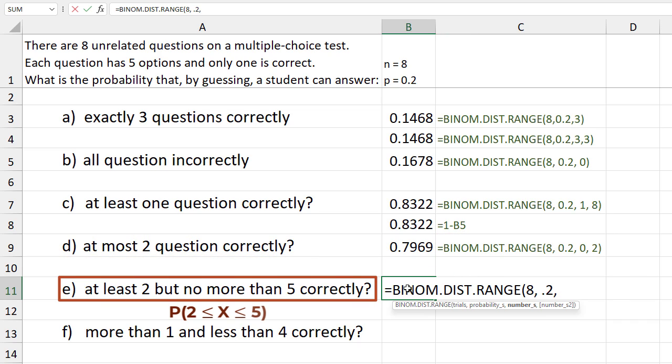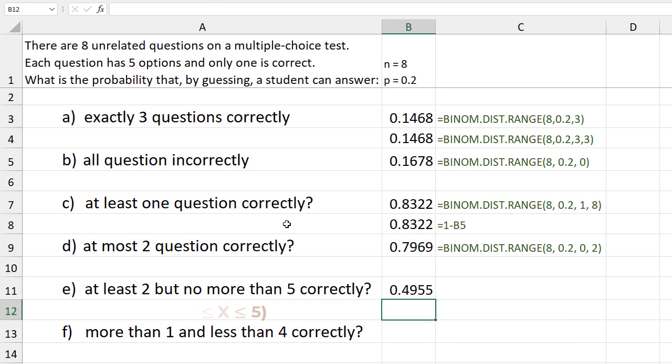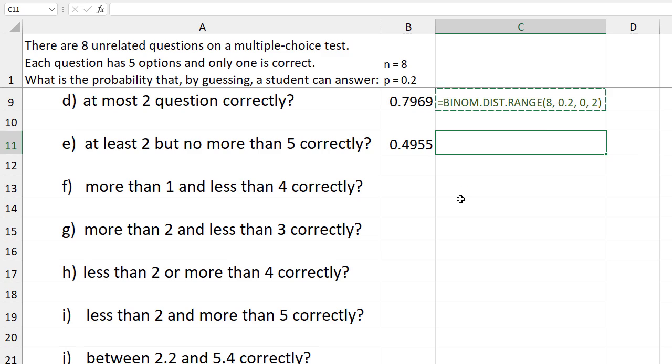For e, at least 2 but no more than 5 means we're going from 2 to 5. Copy the formula. Paste for e.